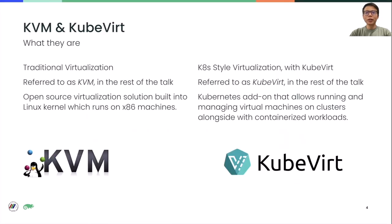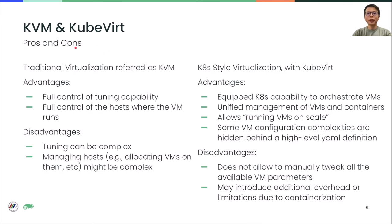Just a quick recap. KVM is an open source virtualization solution built into the Linux kernel, which runs on x86 machines. KubeVirt is a Kubernetes add-on that allows you to manage VMs and containers in a unified manner. With KVM, you have full control of tuning capabilities, which can also be a disadvantage because tuning can be complex.